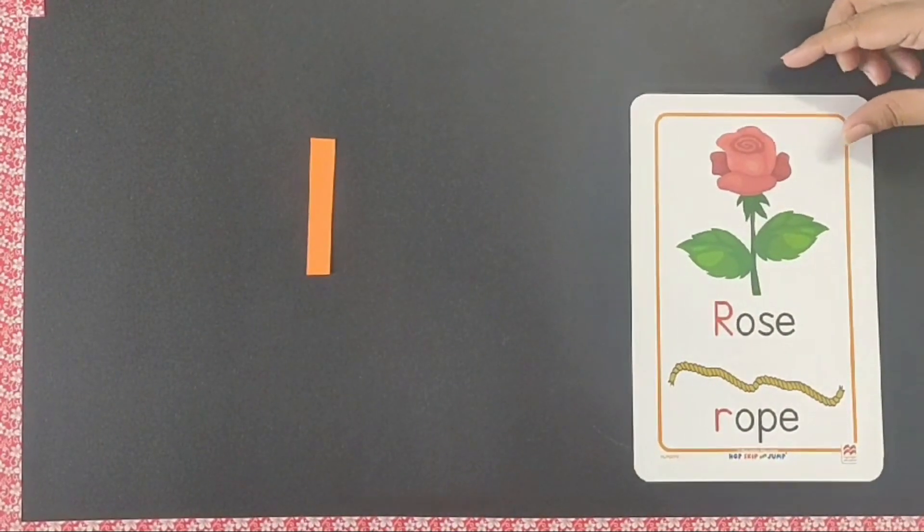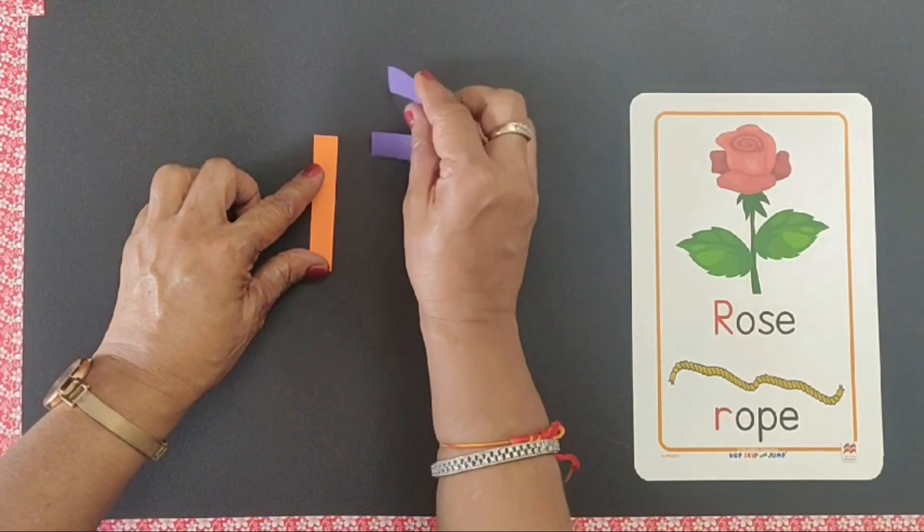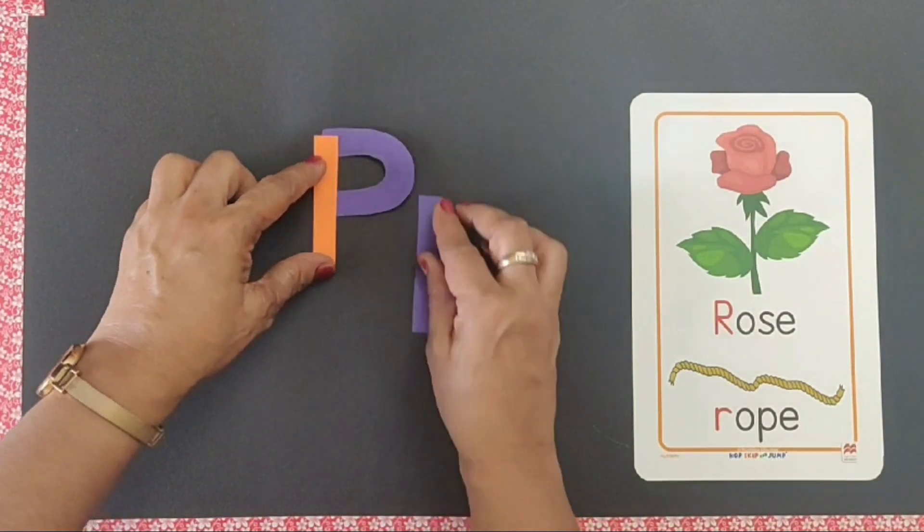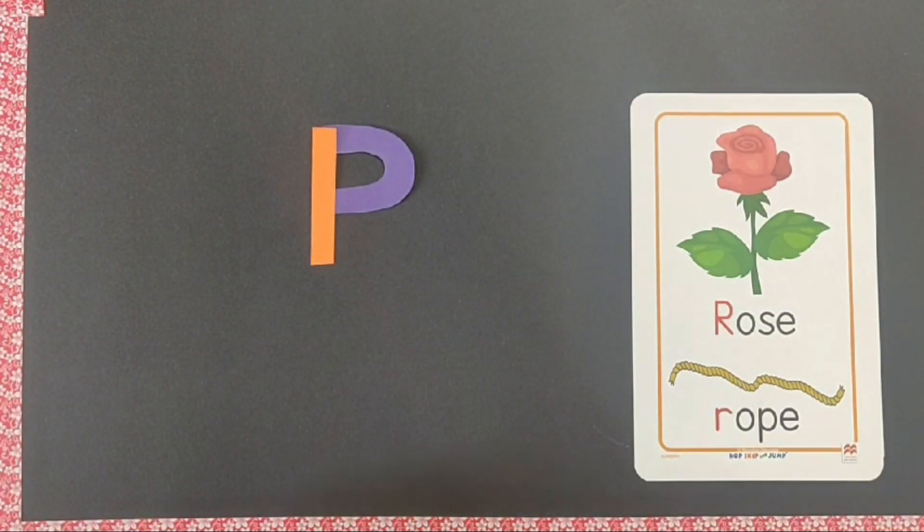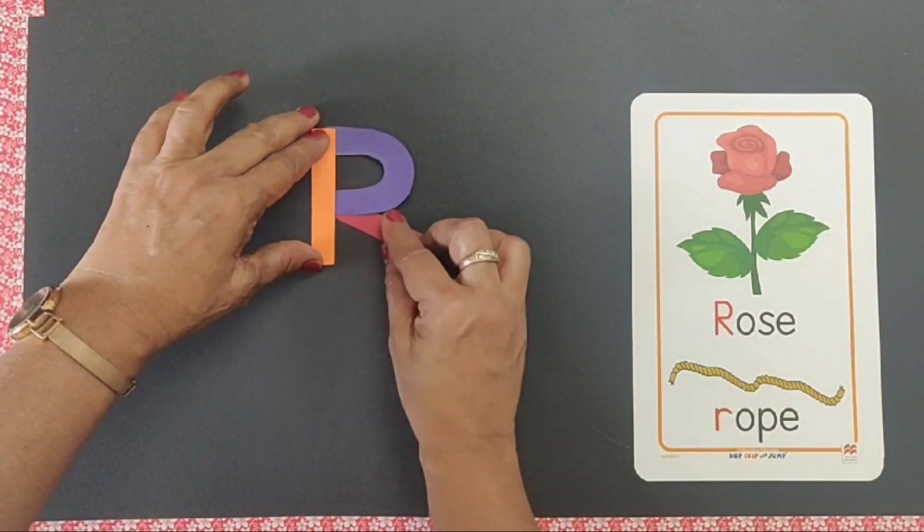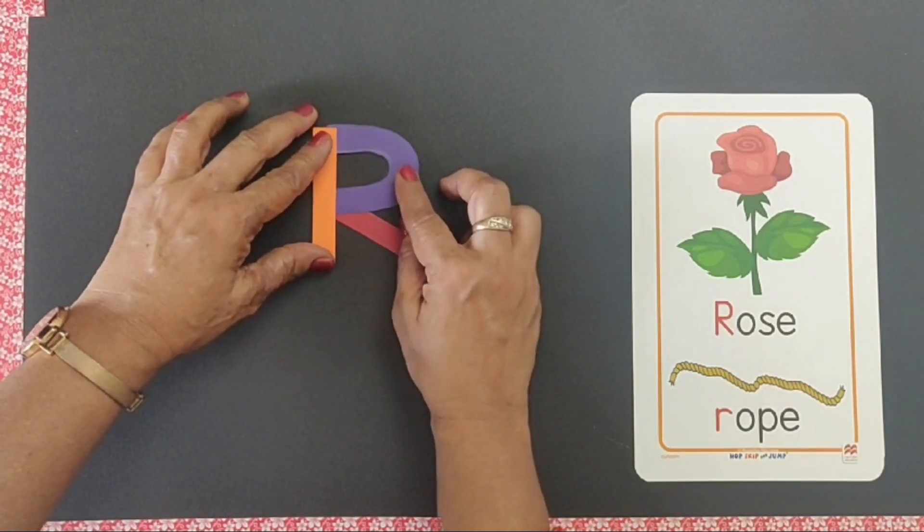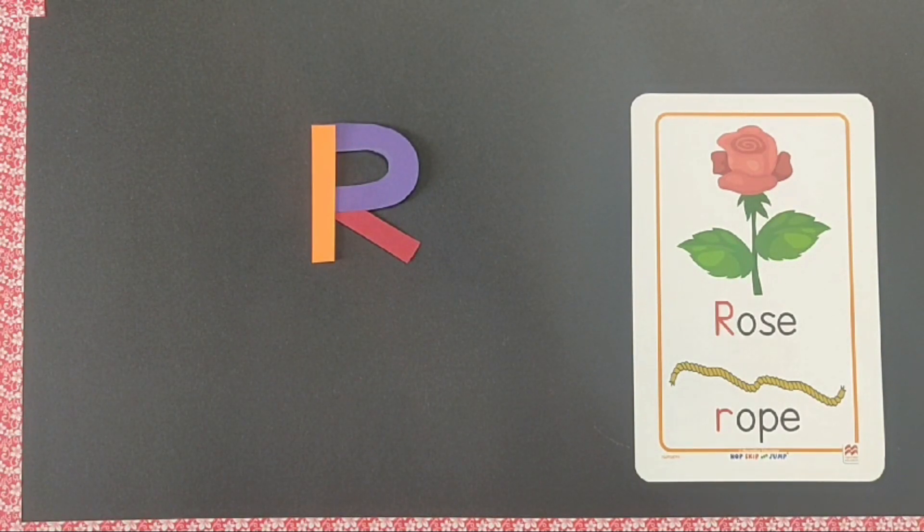First strip like this. R. Say R says ruh, R for rose.